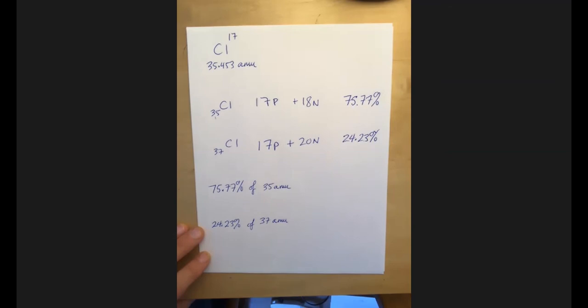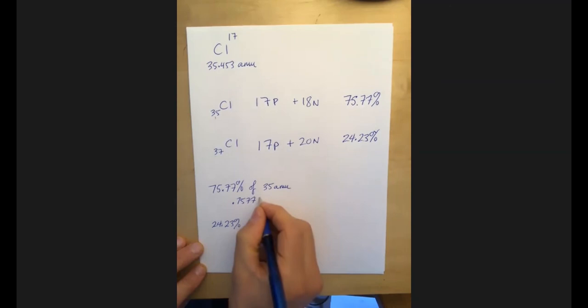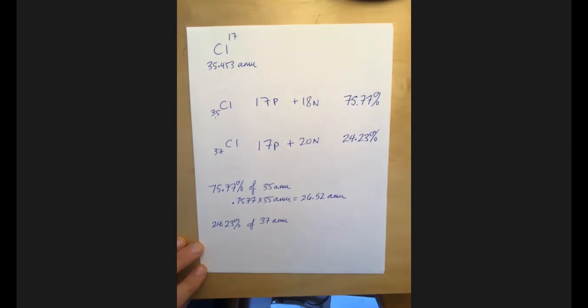And we could say that 24.23% of chlorines have a mass of 37 AMUs. Okay? Yeah. And so I would say to find out what the contribution of each is, well, let's see 0.7577 times 35 AMUs equals 26.52 AMUs.